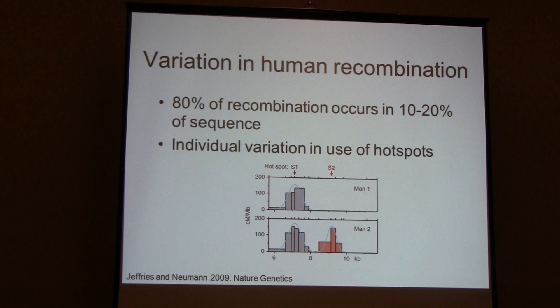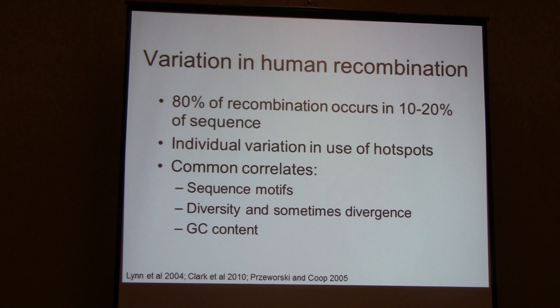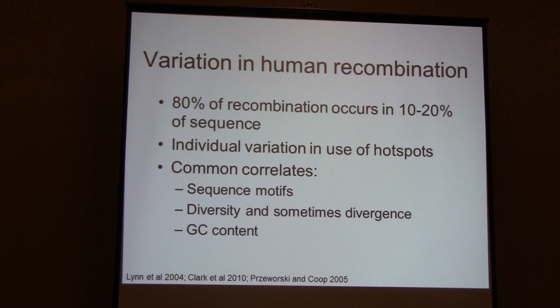Sperm typing studies in humans have shown that there's individual variation in the use of specific hotspots — certain hotspots are used constitutively across different individuals, whereas others are used preferentially in certain individuals. The field has also looked at common genetic features correlated with recombination rate variation, including sequence motifs, which led to the discovery of transcription factors such as PRDM9. We've also looked at correlations with diversity, divergence, GC content, and GC-biased gene conversion across the genome.